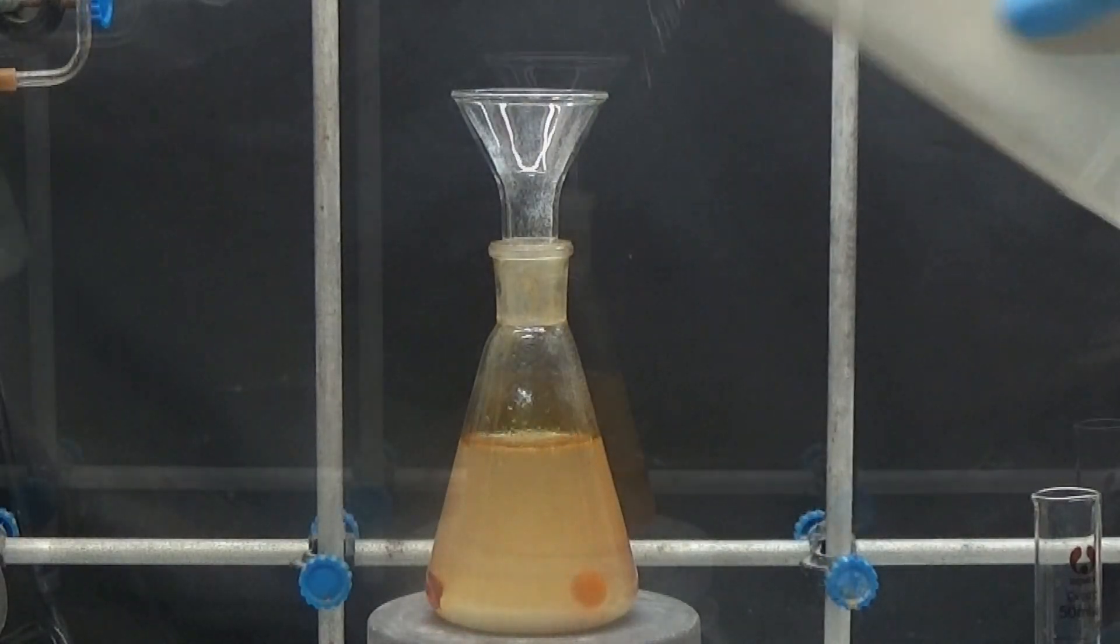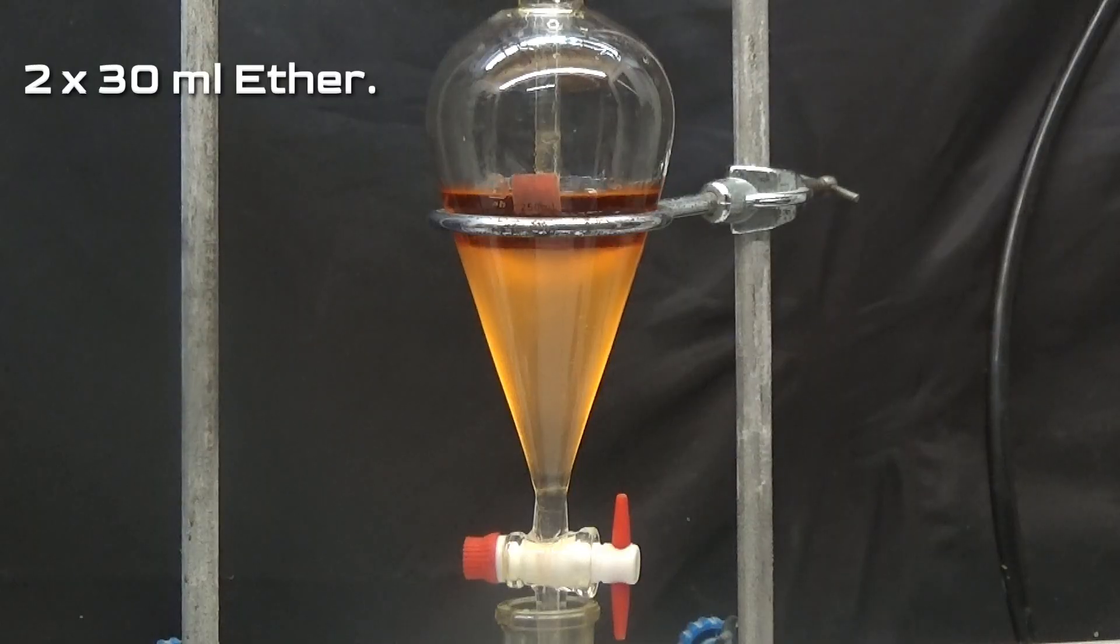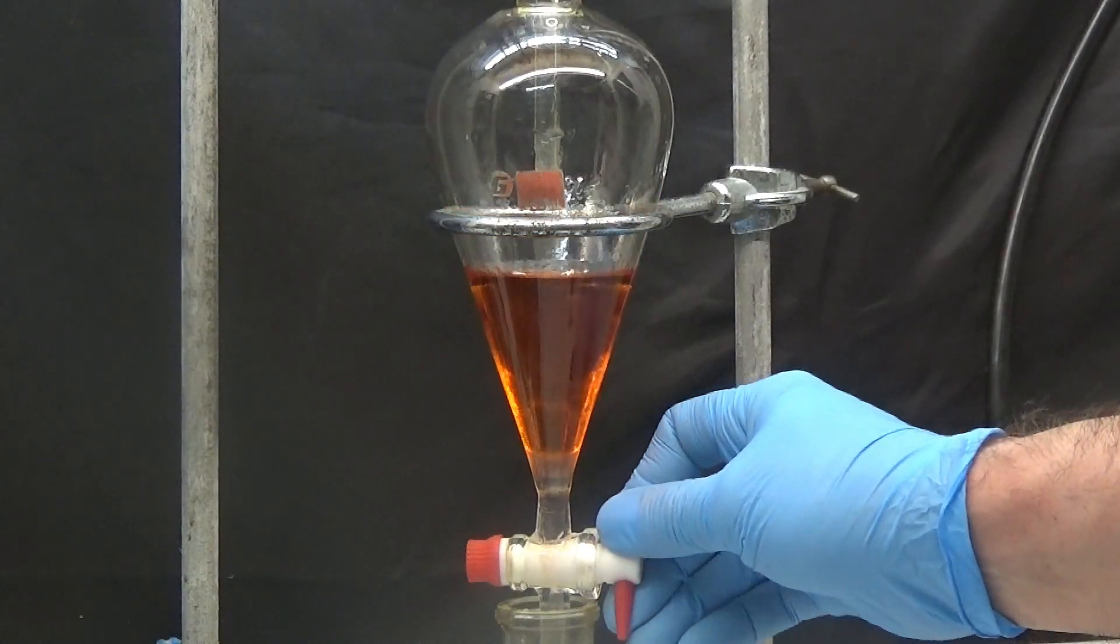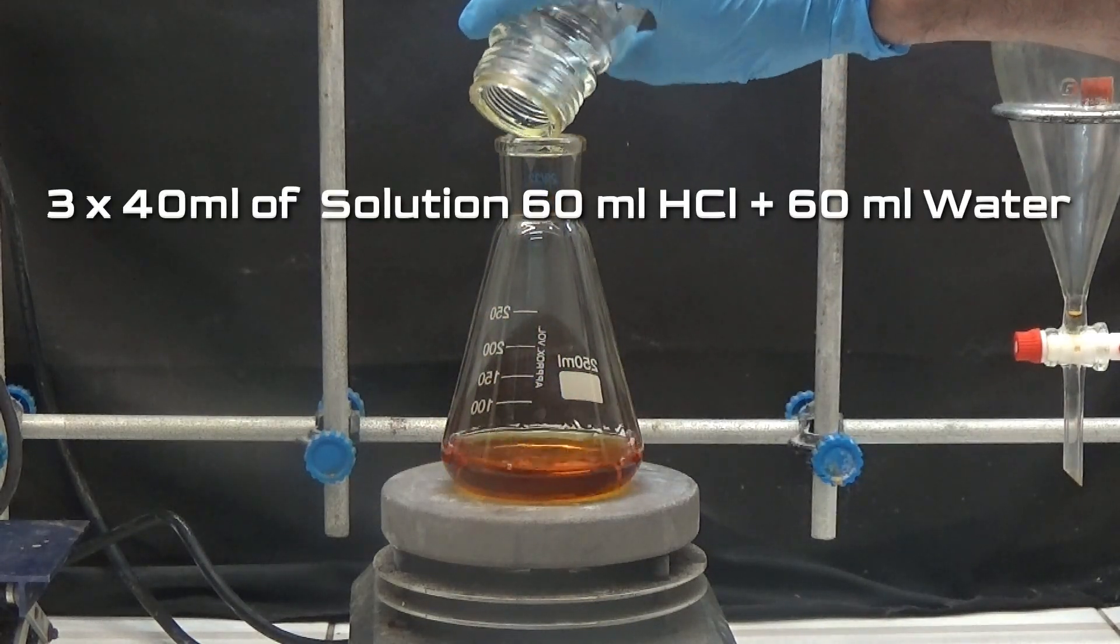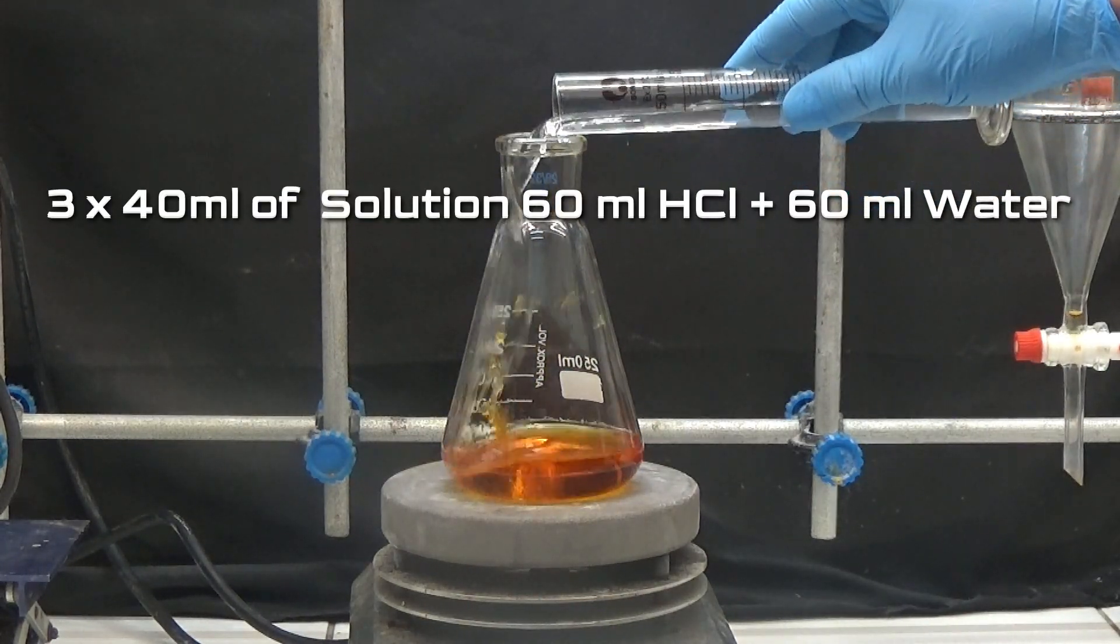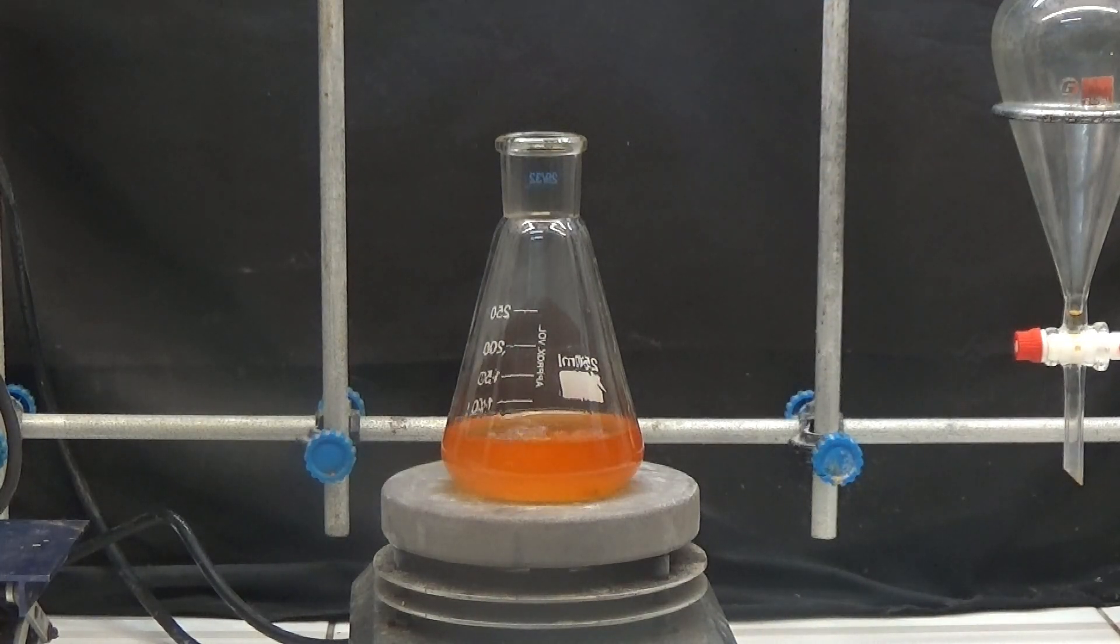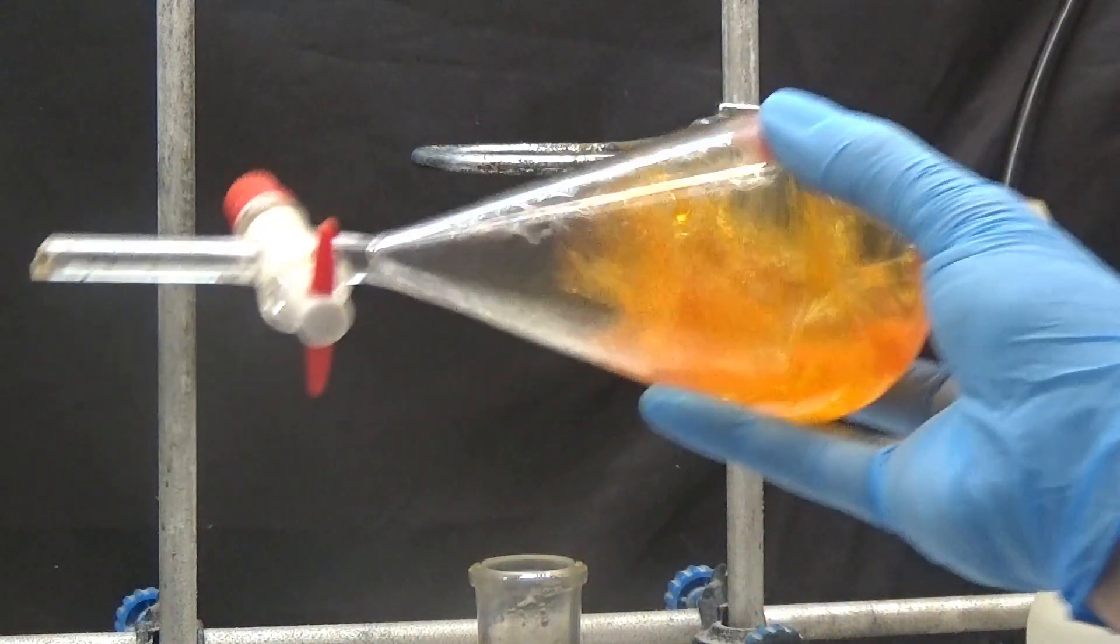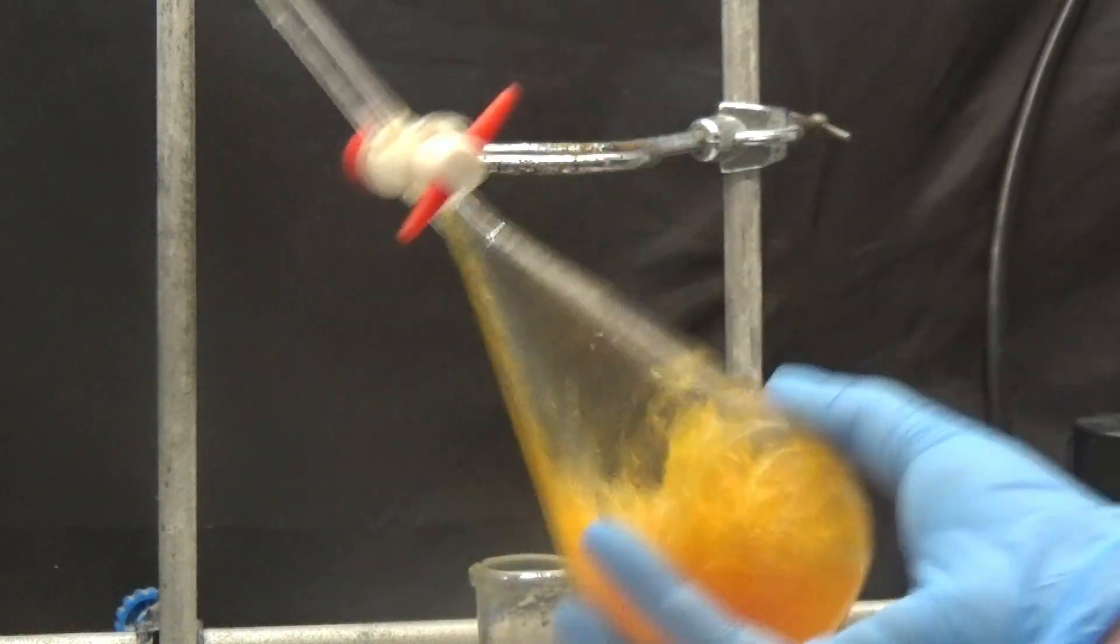Saturate the distillate with sodium chloride and extract the chlorotoluene twice with 30 milliliters of ether. Wash the ether solution three times with 40 milliliters of a solution of hydrochloric acid diluted in 60 milliliters of water. This is done to remove unreacted toluidine. Wash the organic phase with 30 milliliters of saturated sodium hydrogen carbonate solution and dry with anhydrous magnesium sulfate.